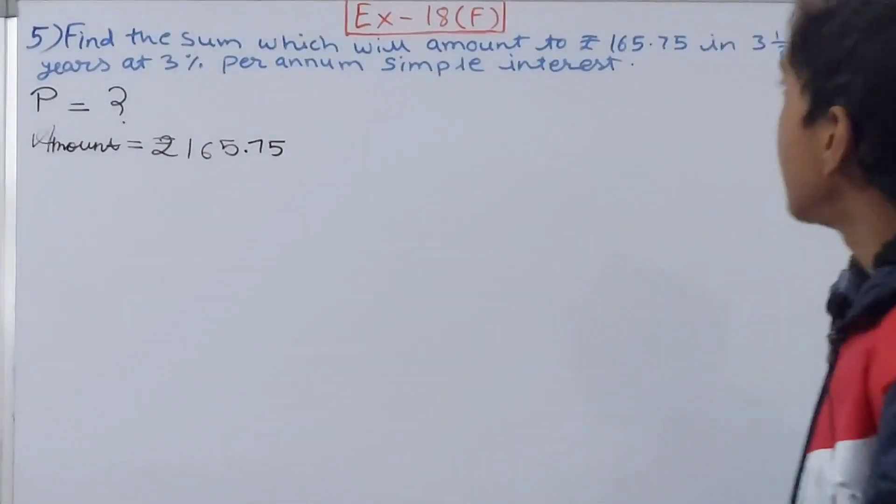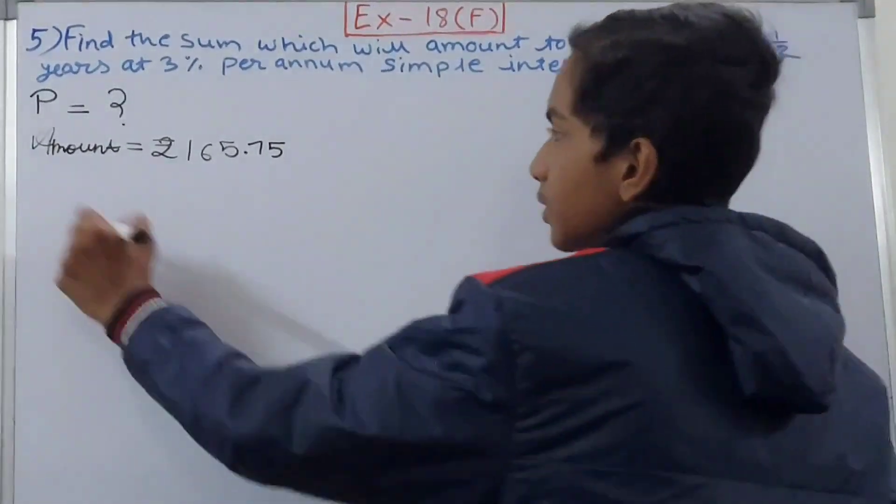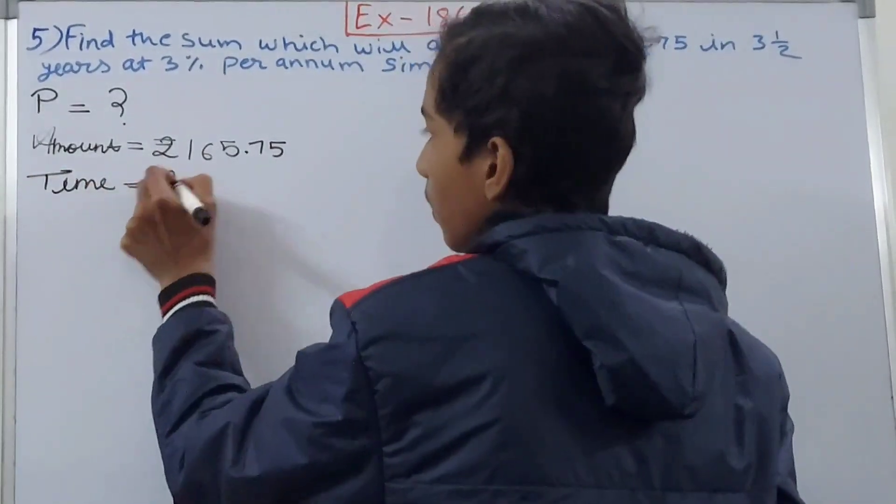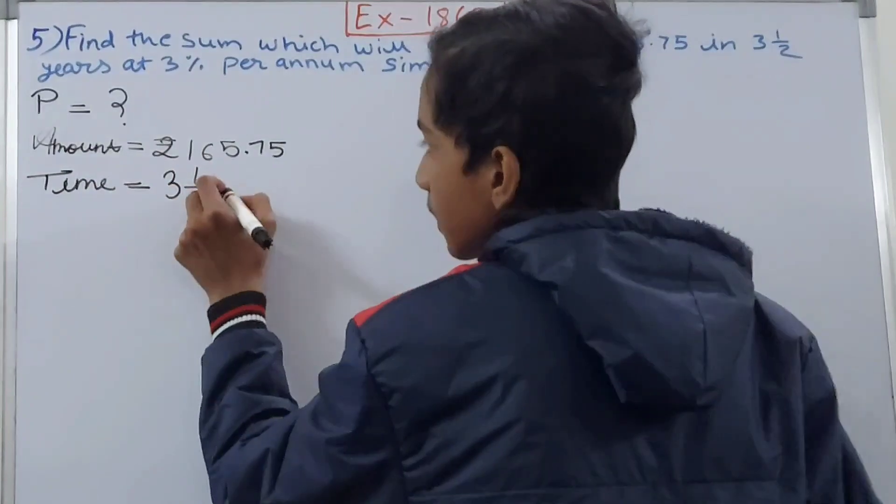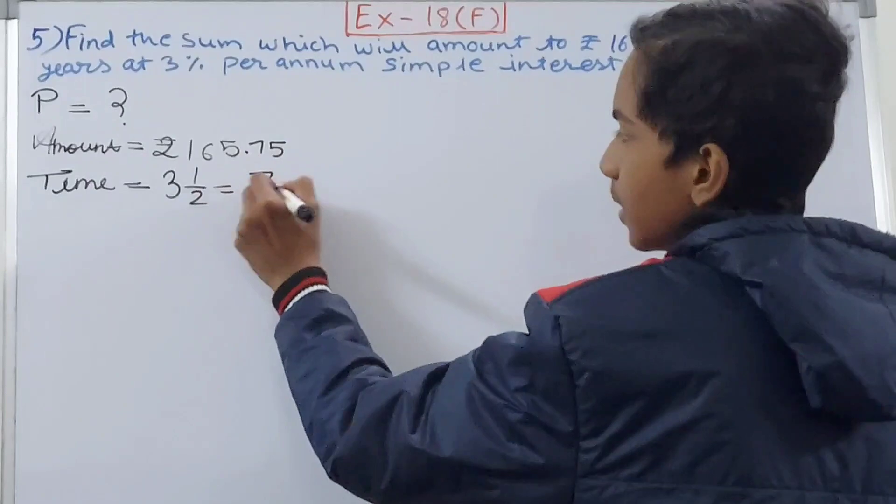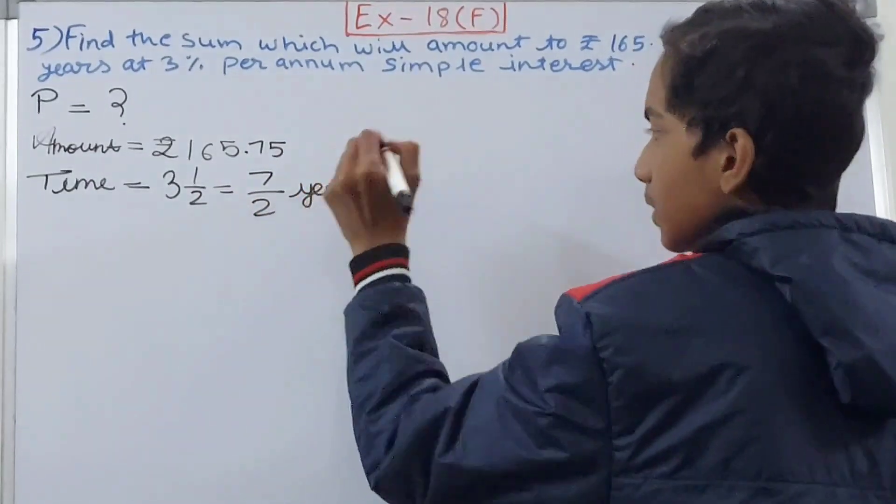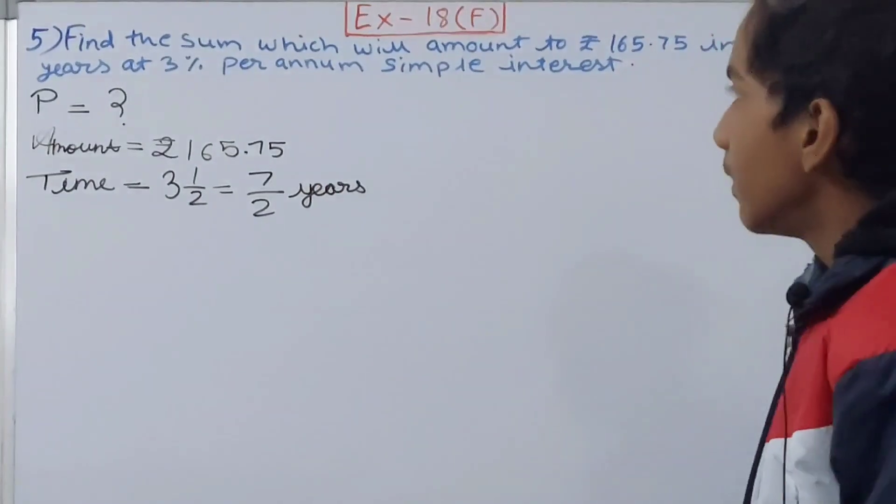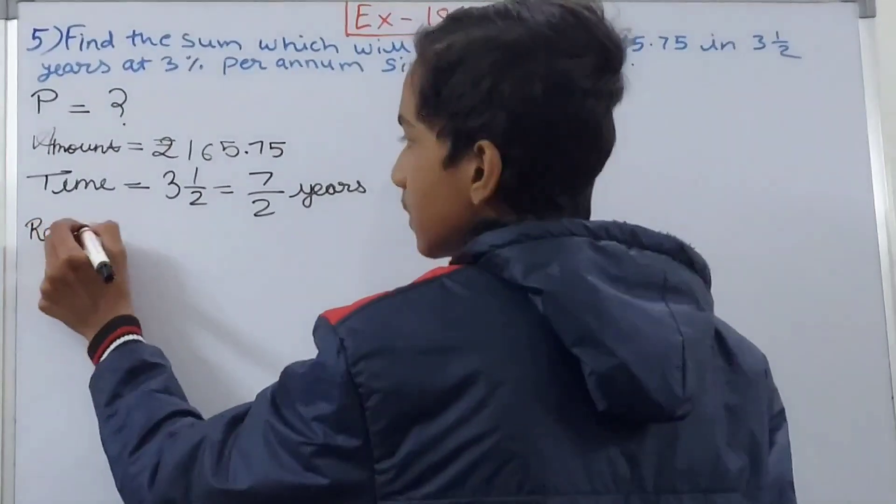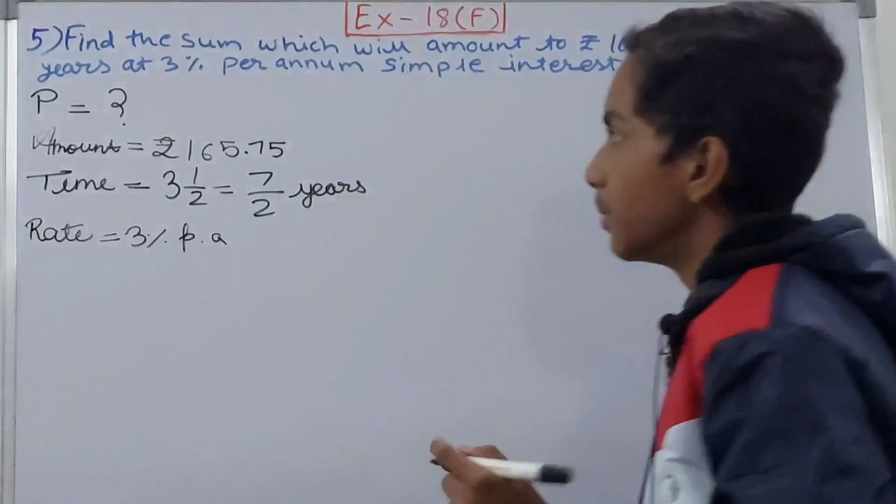It says in 3½ years - 3½ years is our time. The time becomes 3½ years, or you can convert this into an improper fraction, so this will become 7/2 years. The rate is also given - the rate is 3% per annum.